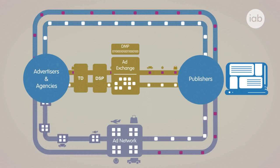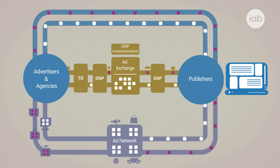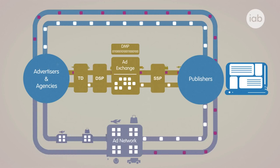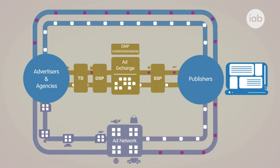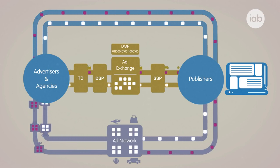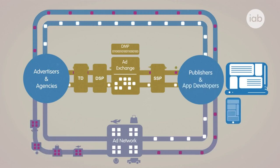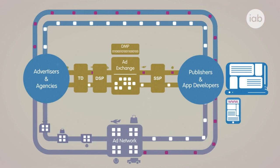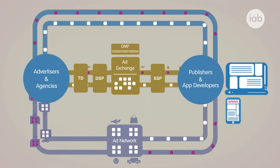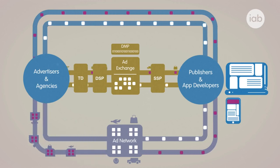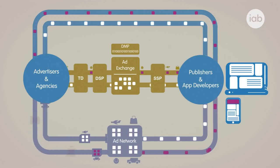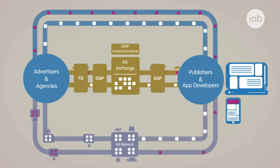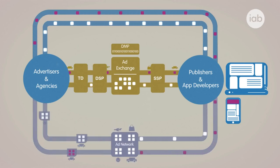On the sell-side, publishers made their impressions available to aggregated sell-side platforms. With the rapidly increasing availability of mobile inventory, app developers started to appear alongside traditional desktop publishers. The role of the ad network diminished as they adopted this new technology, and today only a small proportion of inventory is traded this way.